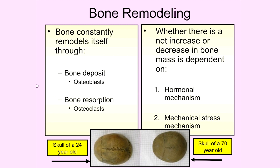As you learn about bone remodeling, there are a couple of cell types to be familiar with. First, we have cells that work to build and deposit bone, known as osteoblasts. A helpful way to remember this: osteoblasts have a 'B' sound in them, and bone building is what osteoblasts do.